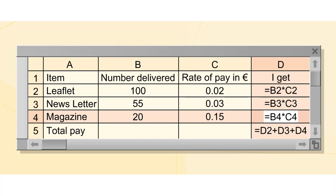This multiplies the contents of cells B4 and C4, so 3.00 euros will automatically appear in D4. If B4 or C4 is altered, the amount will change automatically.